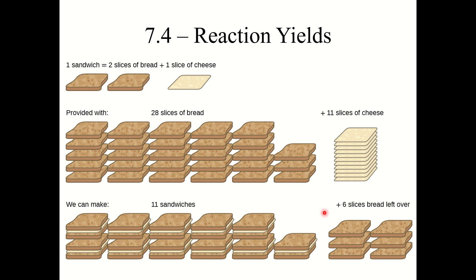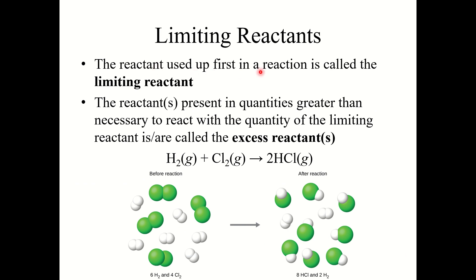We're going to talk about some terms here called limiting reactant and excess reactant. In this analogy, the cheese is the limiting reactant because the slices of cheese run out first. And what do we have left over? We have bread left over. So bread is the excess reactant. The reactant that is used up first is called the limiting reactant. The reactant present in quantities greater than necessary is called the excess reactant.